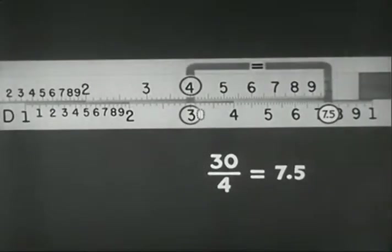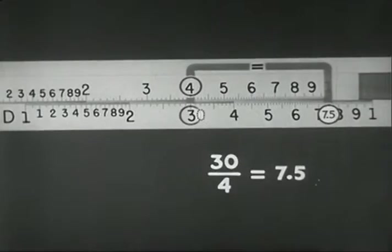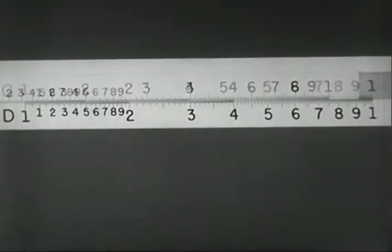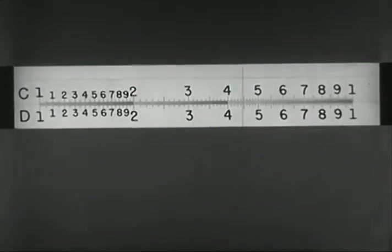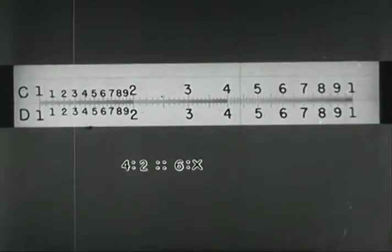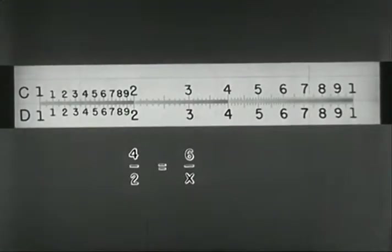When skill has been acquired in multiplication and division, problems in proportion may also be solved with the C and D scales. Let us take the simple proportion, 4 is to 2 as 6 is to x. The proportion may also be stated like this, a form more convenient when using the slide rule.